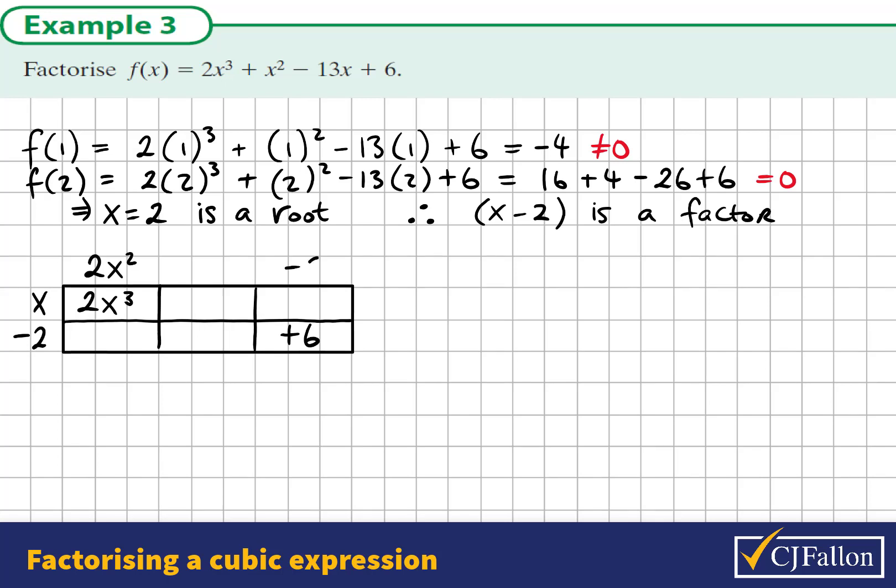x goes into 2x cubed, 2x squared times, negative 2 goes into 6, negative 3 times. And we multiply out some of the missing terms, so x by negative 3 is negative 3x. The x terms must add up to negative 13x, so I need a negative 10x to add to negative 3 to add up to that. Then I divide that term by negative 2, giving plus 5x.